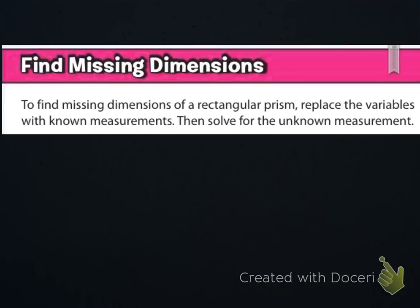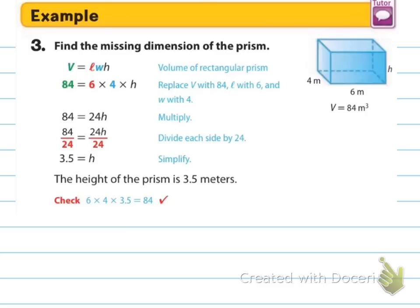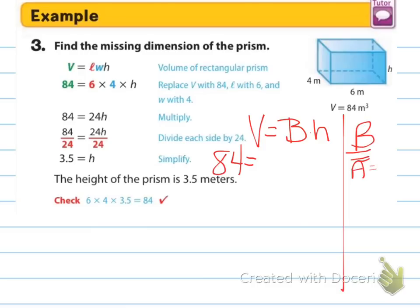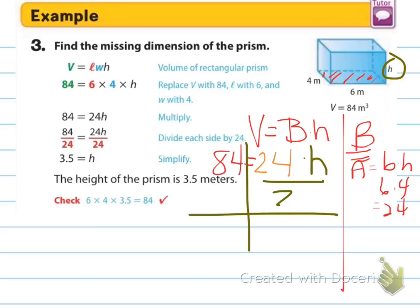So now we're going to talk about finding dimensions that are missing. To find missing dimensions of our rectangular prism, replace the variables with known measurements, then solve for the unknown measurement. So we're still going to use that same formula, just sometimes we're not going to know all the parts to it. So again, I'm using volume equals big B times height. They're telling us the volume is 84. They gave us the information we need for finding the big base, because that would be base times height, which I'm going to use this information. So it'll be six times four, which is 24. But then they're not giving us the height, so I'm going to make that times h, because that's the thing that they did not give us. So now I'm going to do a t-chart.